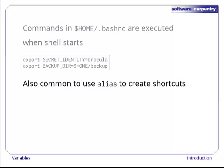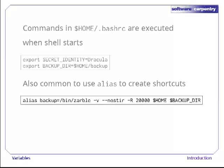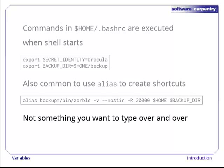And while we're here, it's also common to use the alias command to create shortcuts for things we frequently type. For example, we can define the alias 'backup' to run /bin/zarble with these arguments. Notice that these arguments include references to some variables, so that if we want to change where we put our backups, we only have to change one variable's value in one place. As you can see, aliases can save us a lot of typing and a lot of typing mistakes.